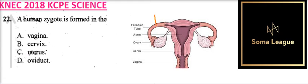Looking at the choices given, the zygote is formed in the oviduct. The oviduct is the same as the fallopian tube, just before you get to the uterus. That is where fertilization occurs and the zygote is formed. So the correct answer is D, and that is how you answer that question.